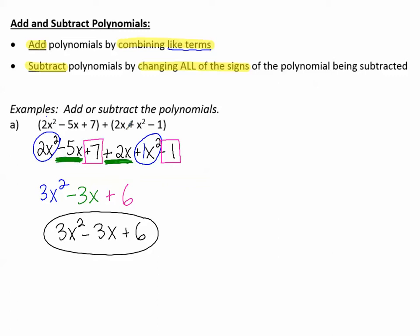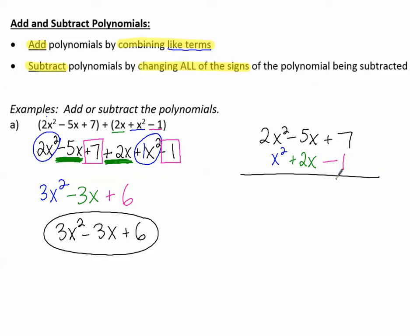Here's another way to do it: write the first polynomial — 2x squared minus 5x plus 7 — and then line up the like terms underneath. So positive x squared, then positive 2x, then the constant negative 1. Draw a line and combine each column: 2x squared plus 1x squared makes 3x squared; negative 5x plus 2x is negative 3x; and 7 minus 1 is positive 6. Same answer, just a different method — pick the way that works best for you.